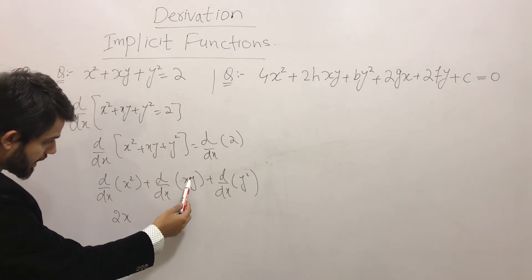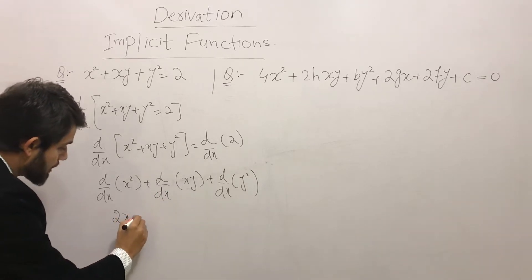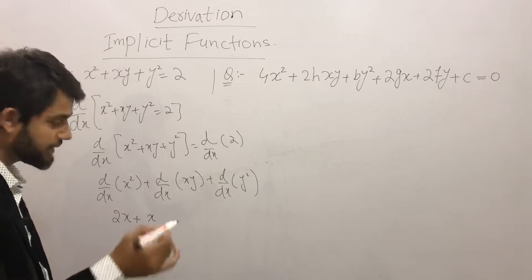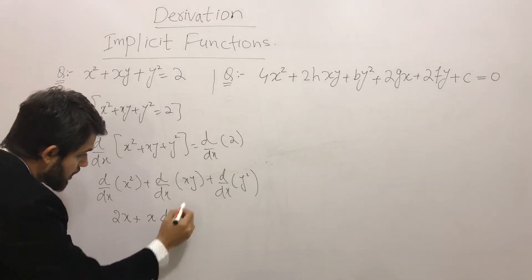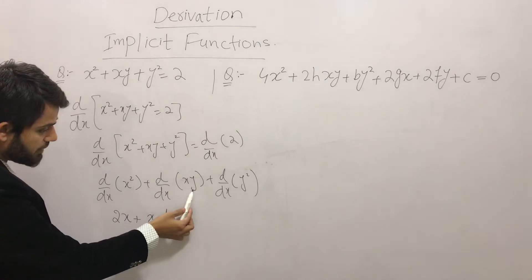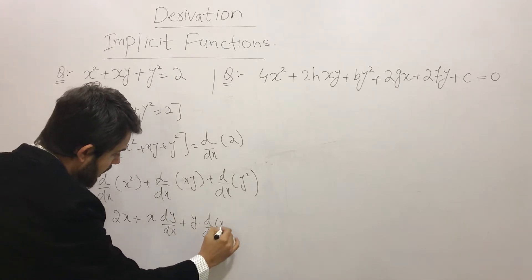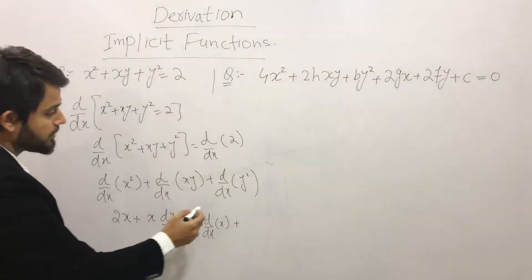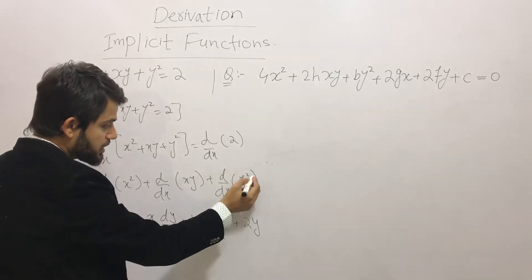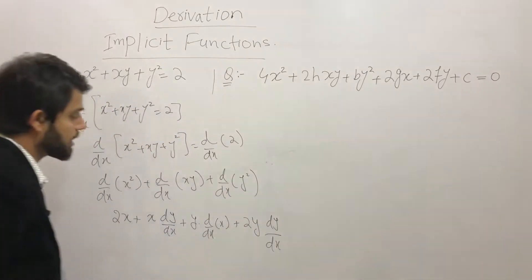For the term xy, we have a product of a dependent and an independent variable, so we apply the product rule: keep x and take the derivative of y, giving x·(dy/dx), then keep y and take the derivative of x with respect to x, which gives y·1. For y², we apply the power rule first giving 2y, then take the derivative of y with respect to x, giving 2y·(dy/dx).